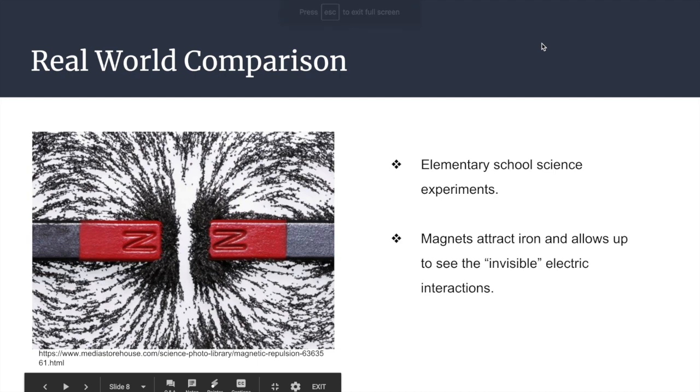In the real world, many examples of this occur. For example, with elementary school science experiments, such as the picture shown of magnets interacting with iron. Similar to our experiment, the magnets of light charges show the repulsion of each other in respect to the electrical interaction.